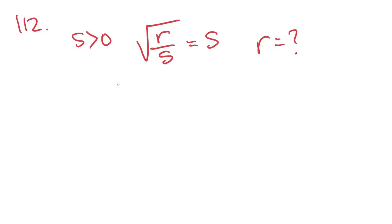So let's square both sides. r over s equals s squared. We cross multiply and we get s squared times s, which equals s to the third power. That is answer choice D.